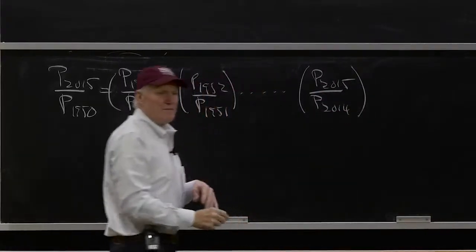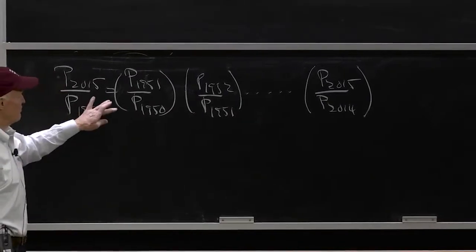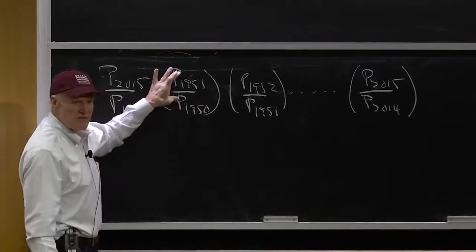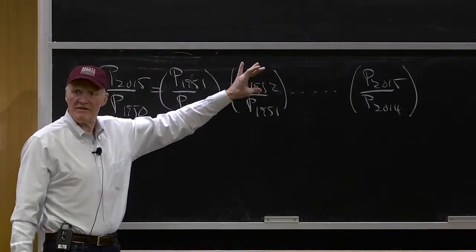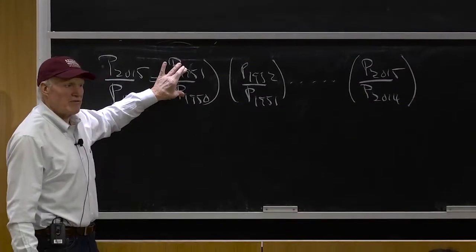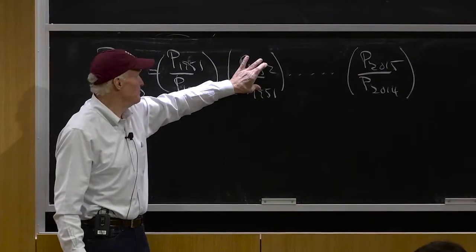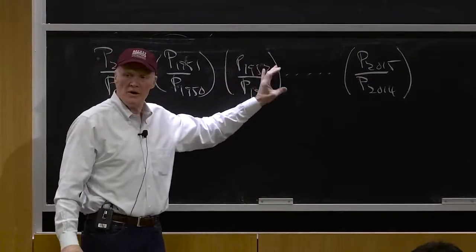That is, we could think about saying, the increase in the cost of living between 1950 and 2014 was really a series of increases in the cost of living, each one going from one year to the next. So there was so much inflation in 1950, so much between 51 and 52, year by year.